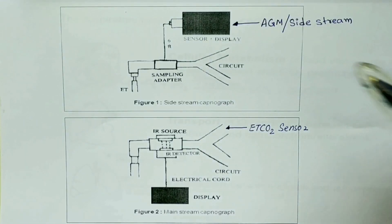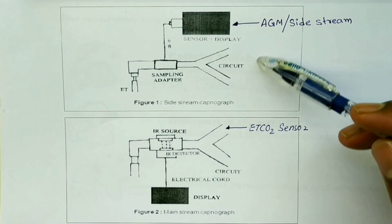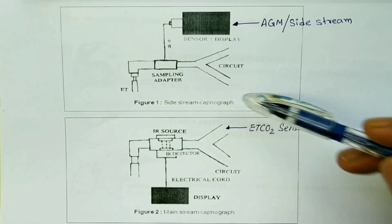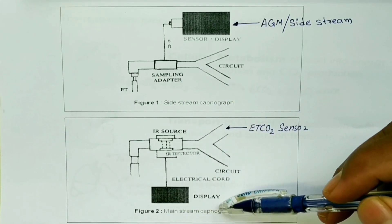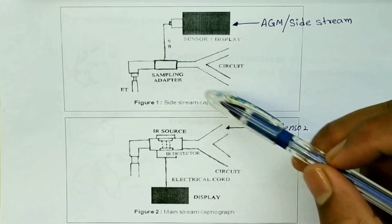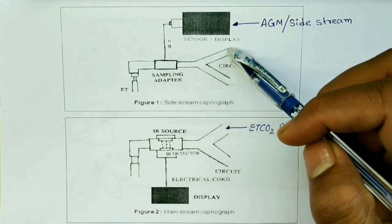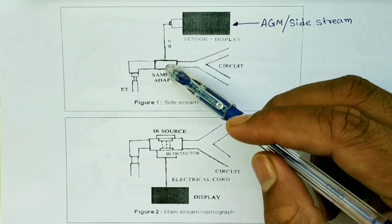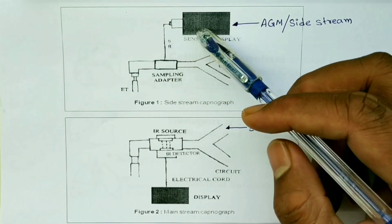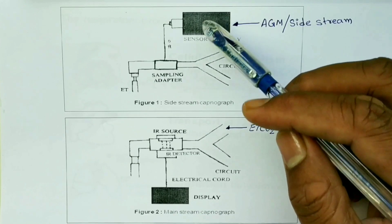The ET CO2 can be taken by two ways. First is the side stream capnography, and then it is the mainstream capnography. In side stream capnography, there is a sampling line attached to the ET tube and this goes to the ventilation circuit. From this, it goes to the AGM or the side stream detector, and there is a sensor and display which calculates the ET CO2.